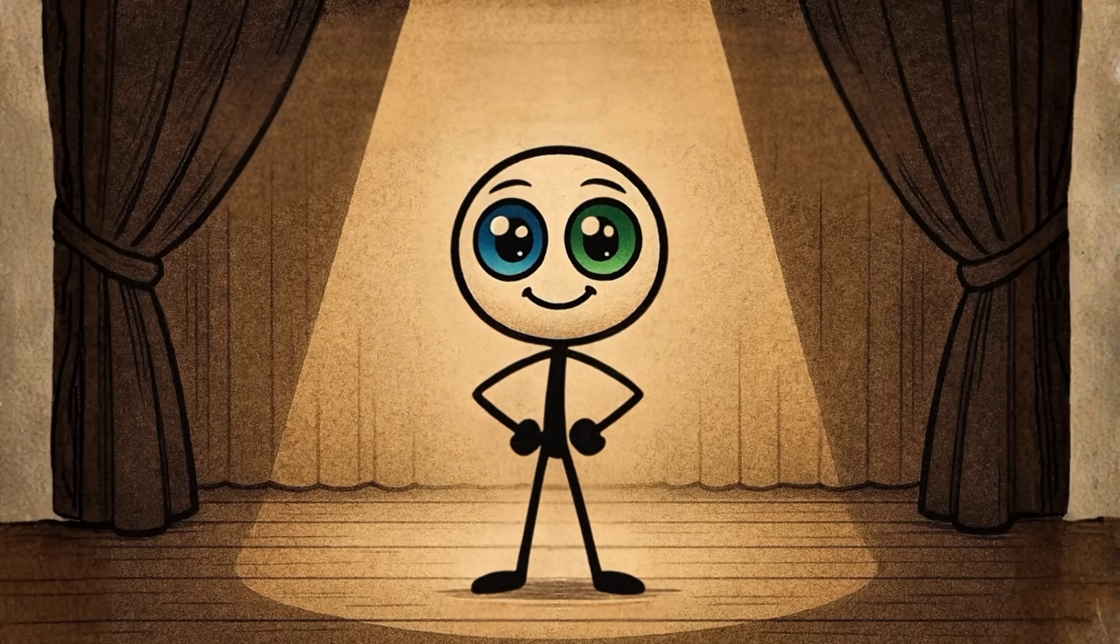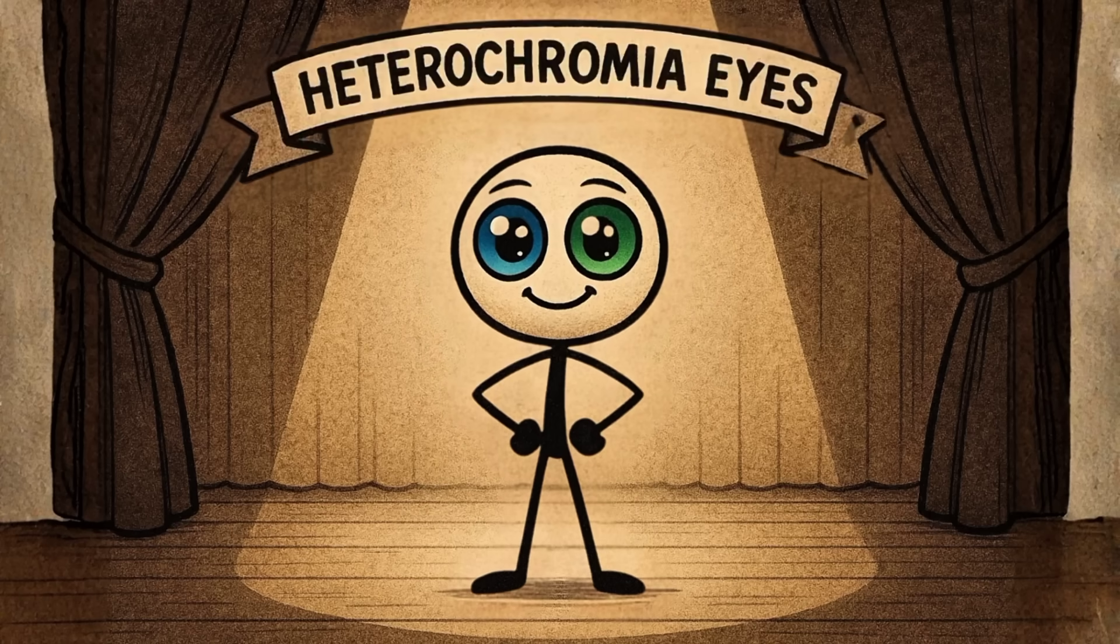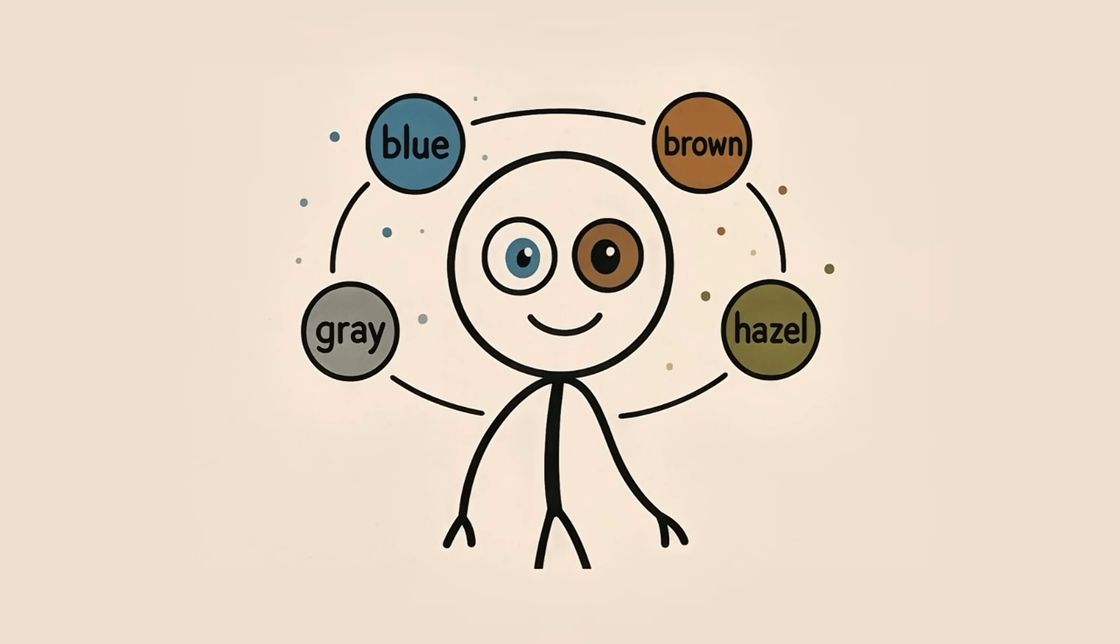Eight. Heterochromia. The double feature. Finally, heterochromia. A.K.A. Two eyes, two moods. It's when your eyes are different colors. One blue, one brown, maybe one hazel, and one gray. It happens because of uneven melanin distribution. Sometimes genetic. Sometimes caused by injury, or even a harmless mutation.